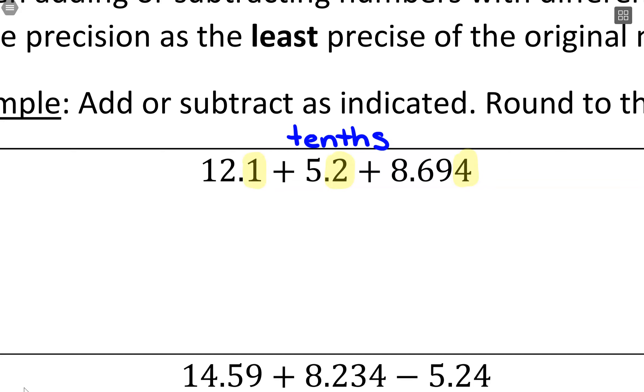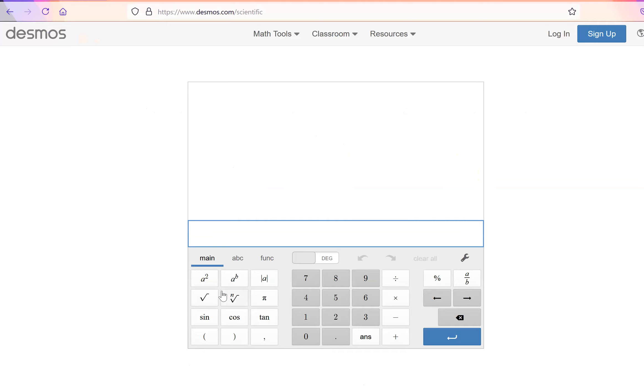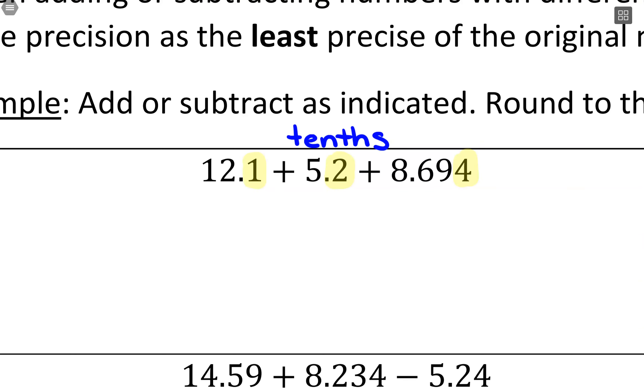Now in terms of the number here, we're just going to use a calculator. So I'm going to open up my calculator and do 12.1 plus 5.2 plus 8.694, and get a value which is 25.994. Let me just go ahead and write down that number: 25.994.